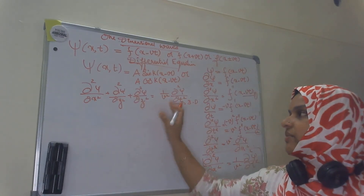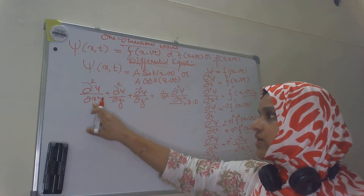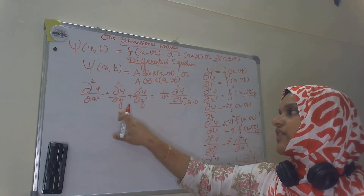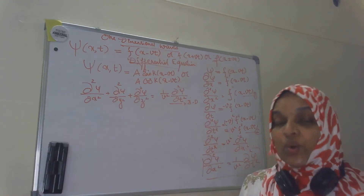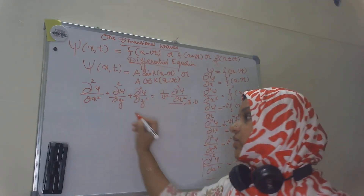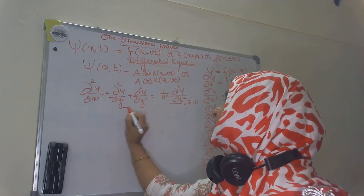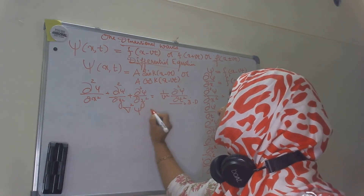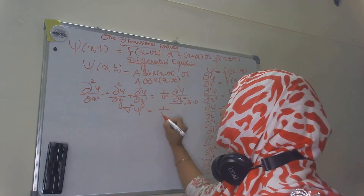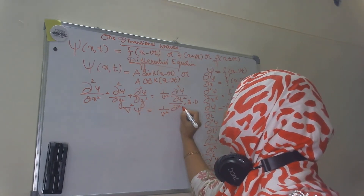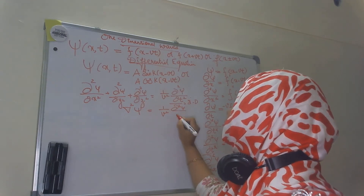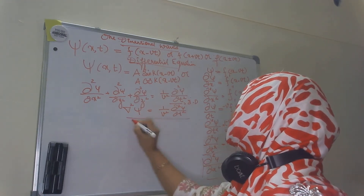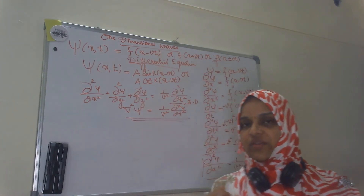The sum ∂²/∂x² + ∂²/∂y² + ∂²/∂z² can also be represented as del-squared (∇²), so the three-dimensional wave equation becomes ∇²psi = (1/v²) ∂²psi/∂t².